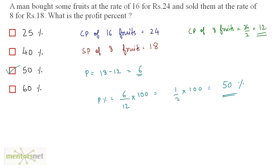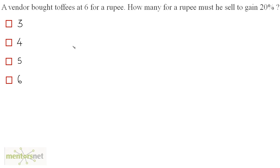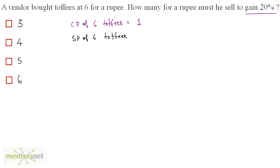So option C is the correct answer. A vendor bought toffees at 6 for a rupee. How many for a rupee must he sell to gain 20%? Cost price of 6 toffees is equal to 1 rupee. The selling price of 6 toffees equals (100 + 20)% of the cost price, so 120/100 times 1, which equals 6/5 rupees.